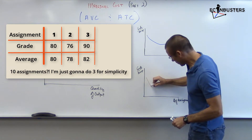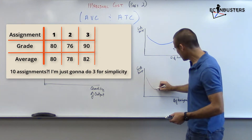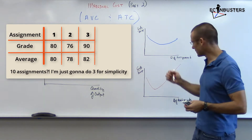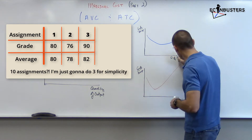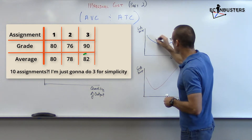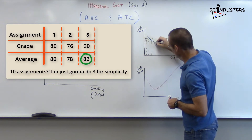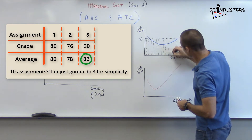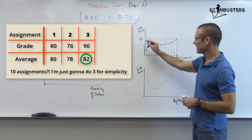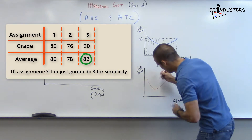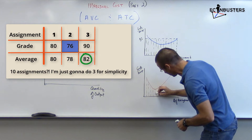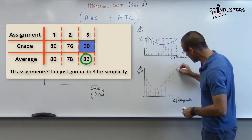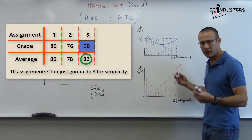Your marginal started at the same place but went down at a steeper rate - because it was pulling your average down - and then went back up at a steeper rate. Notice I'm much higher on that 10th grade on the marginal graph. Your average grade after 10 assignments might be an 82. On the marginal side, maybe your first grade was a little lower, then lower, then you started to understand the class better, and by the 10th you were really killing it.